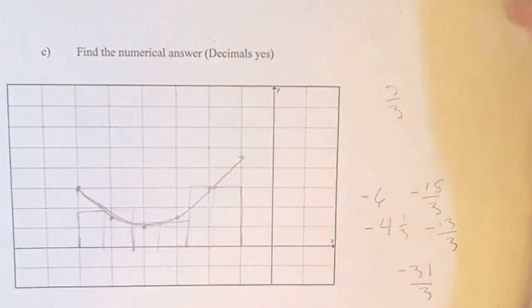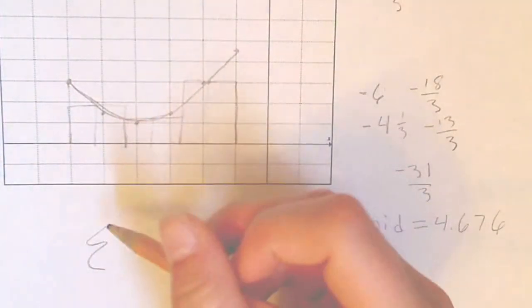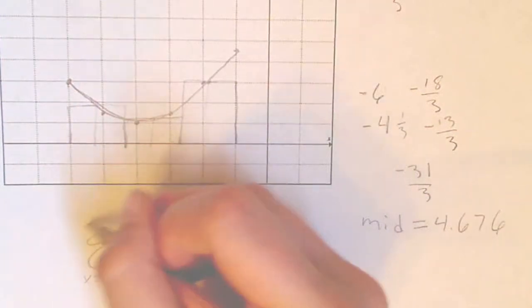To write this in summation notation, you're going to do it right here. It'll just look like this. Because x starts at 0 and it goes to...